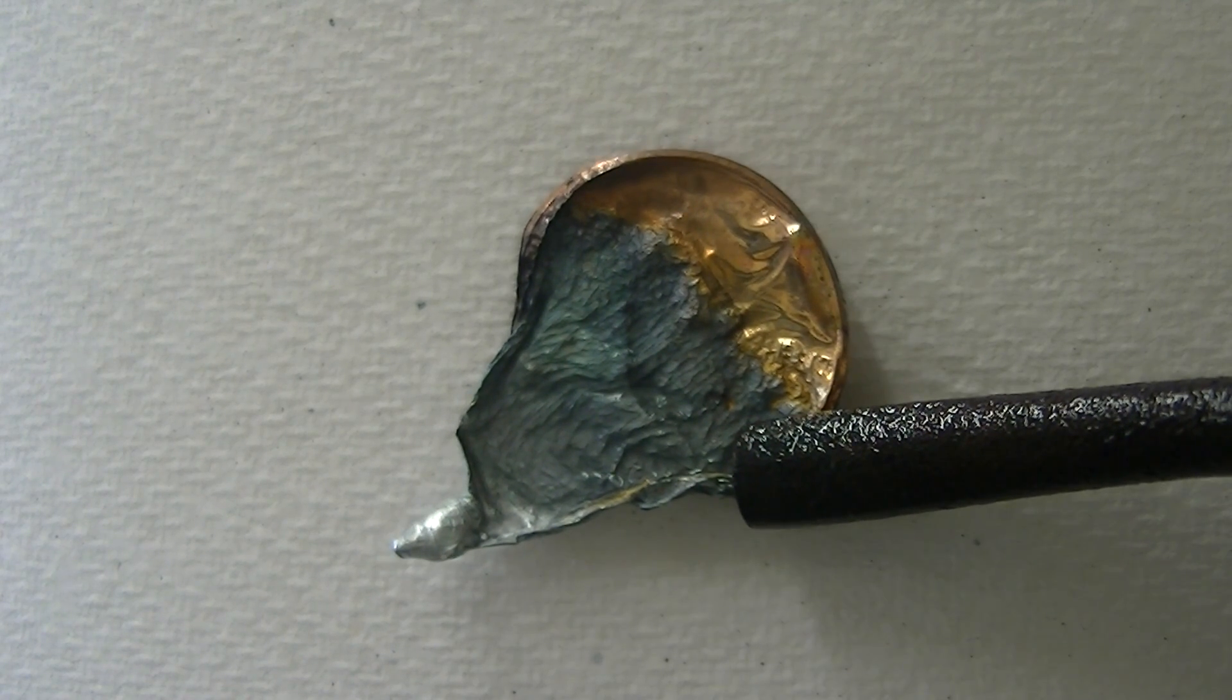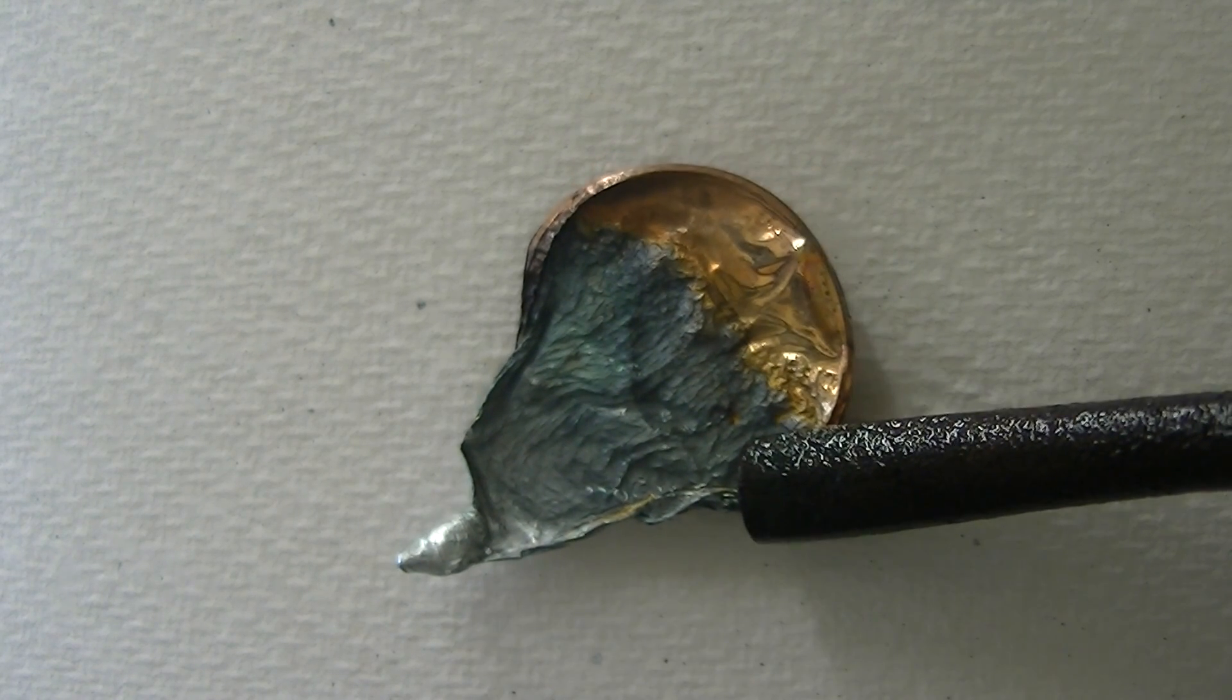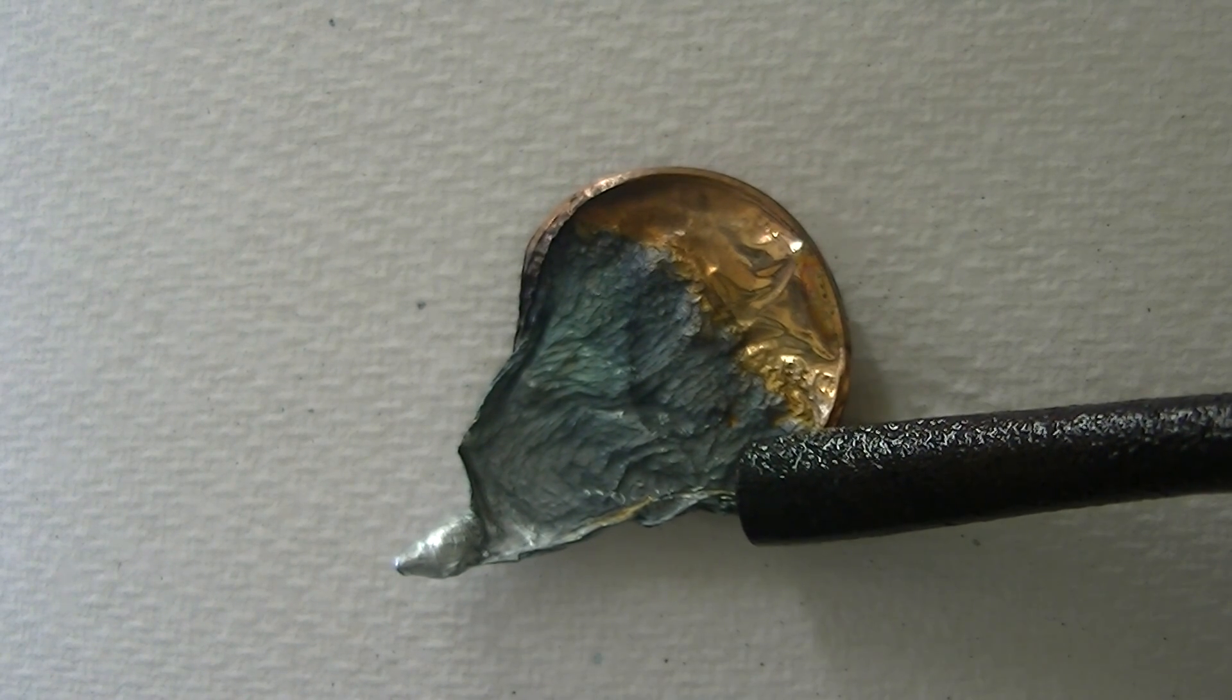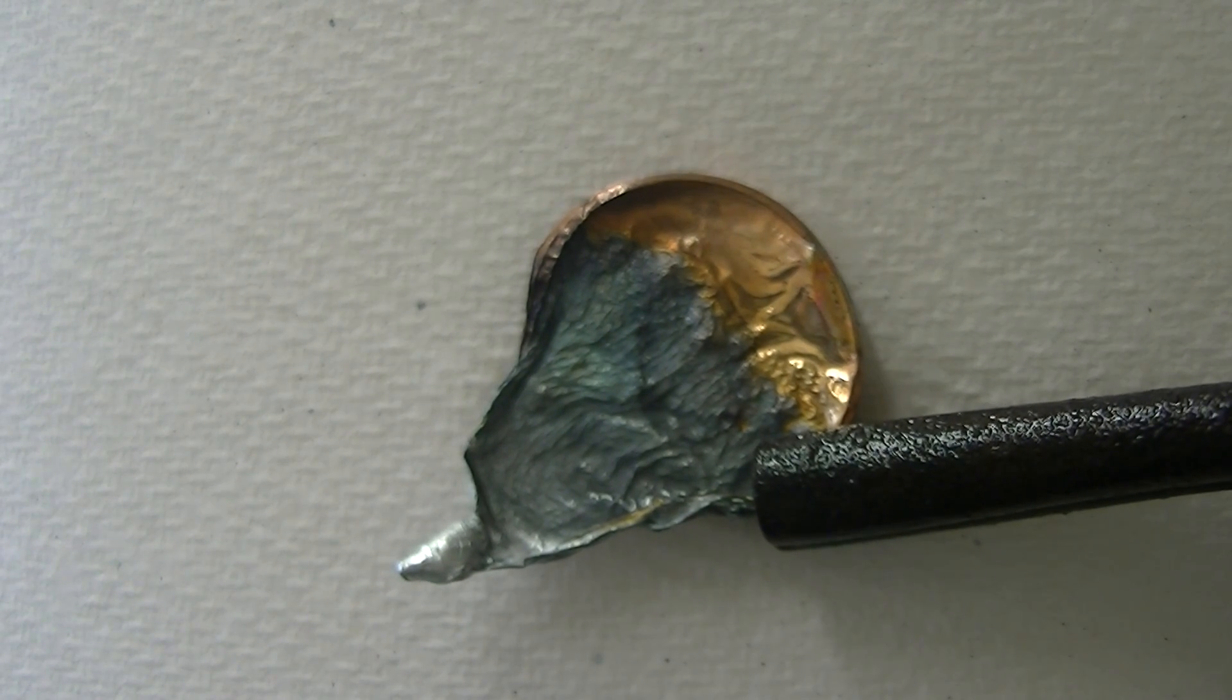And so I think as the molten zinc is dripping out of the penny it mixes with some of the copper in the coat and it mixes in the right ratio so that you get a nice alloy of brass and that gives you that beautiful golden color. So it's sort of the easy way to make brass pennies if you're familiar with the brass penny experiment.